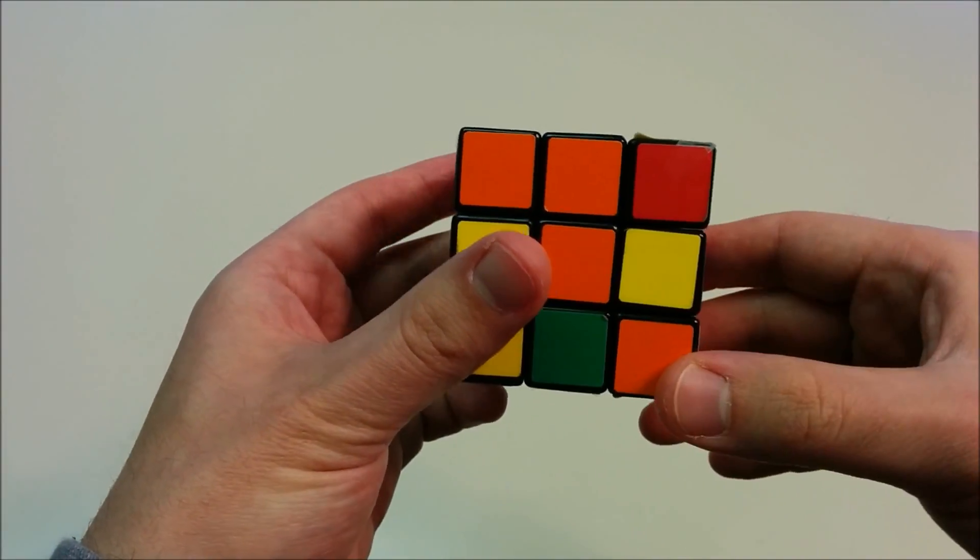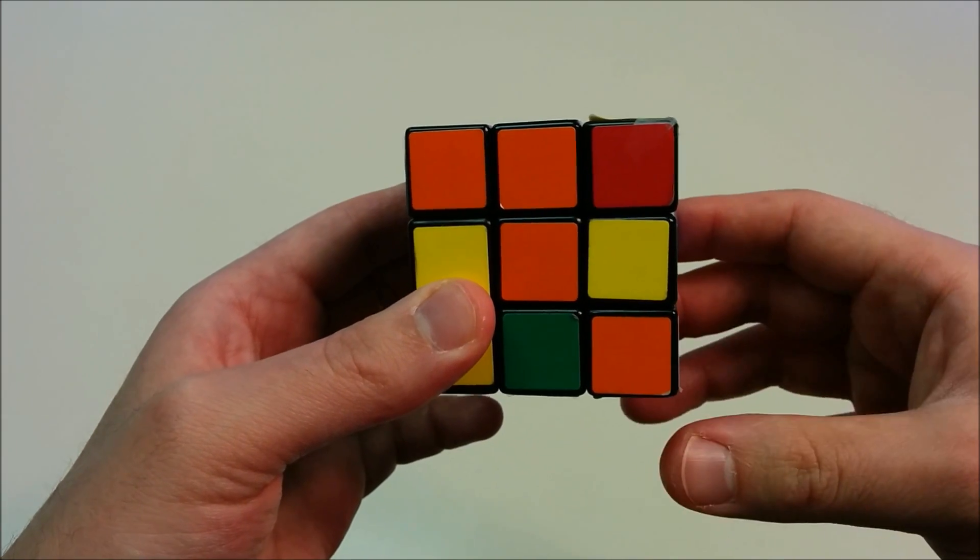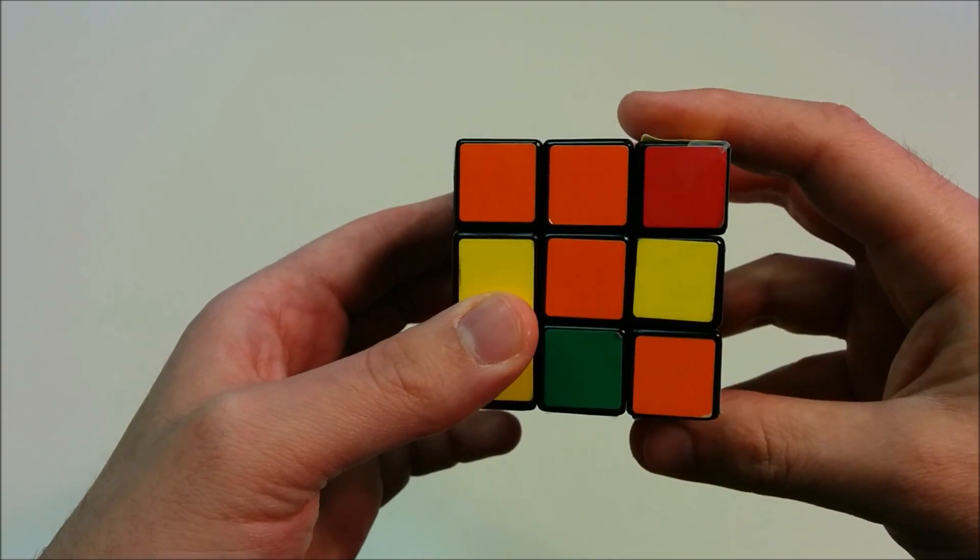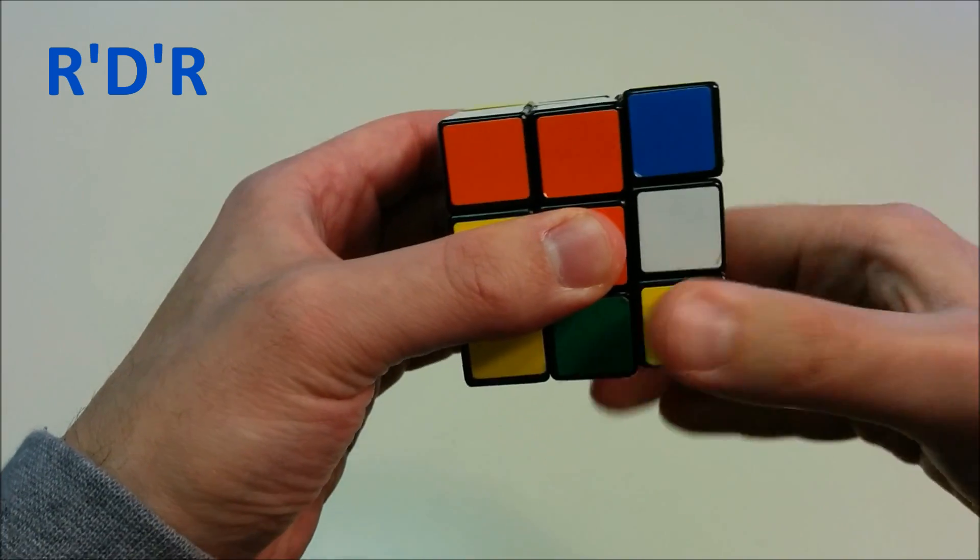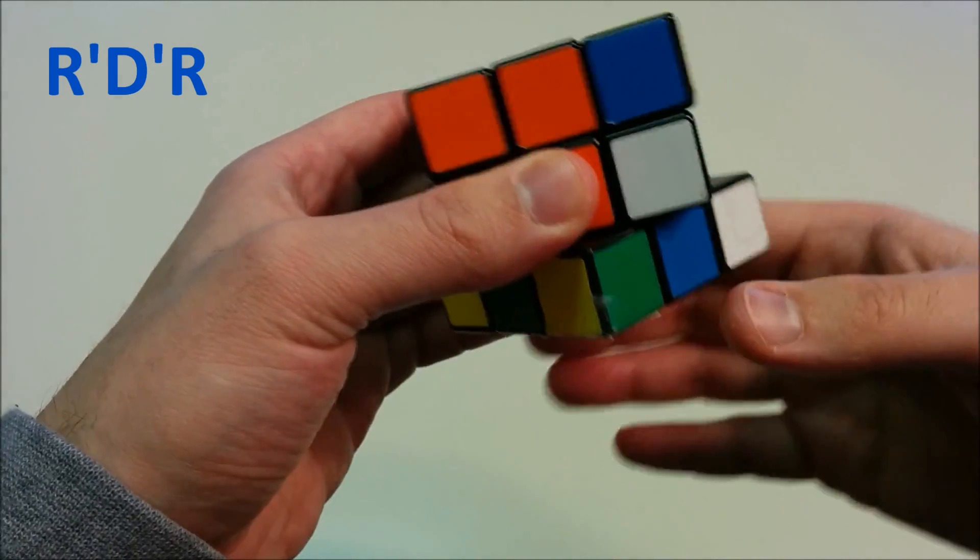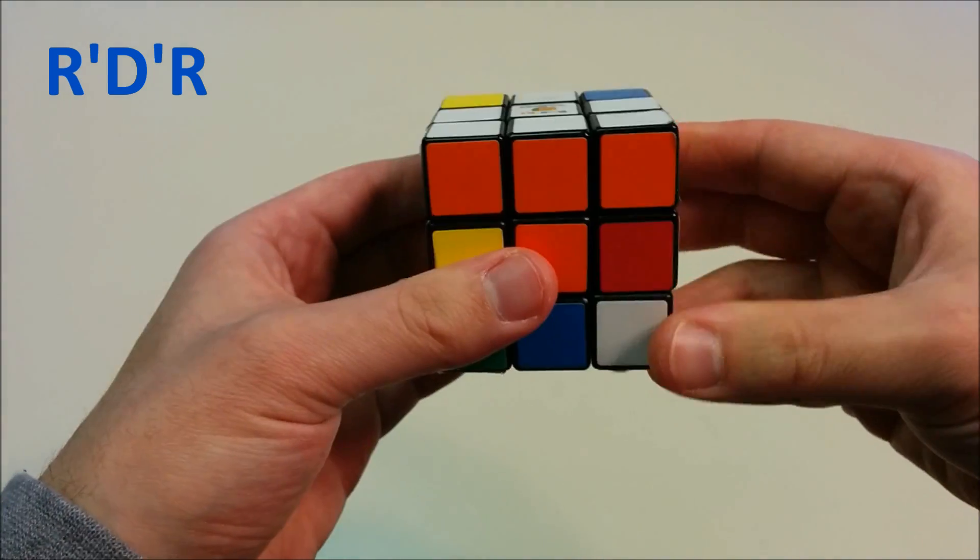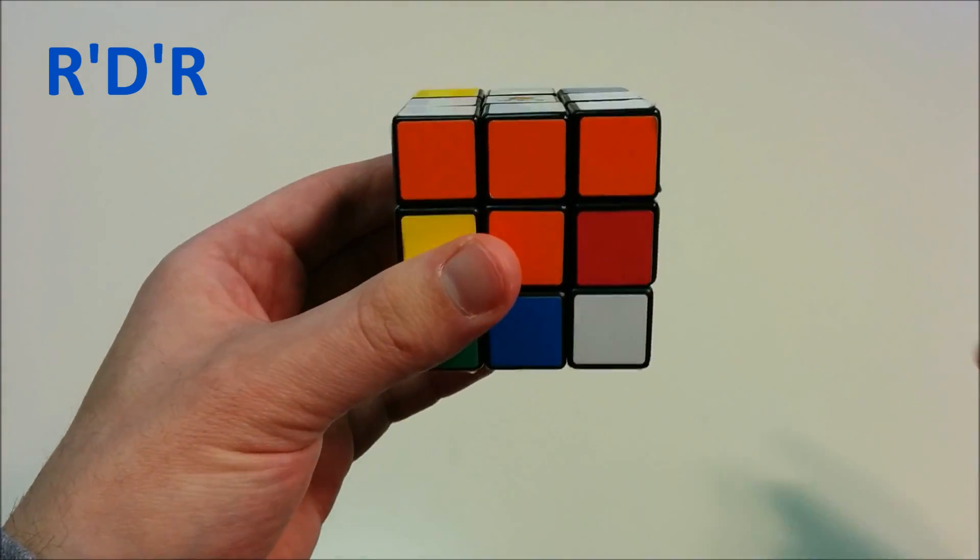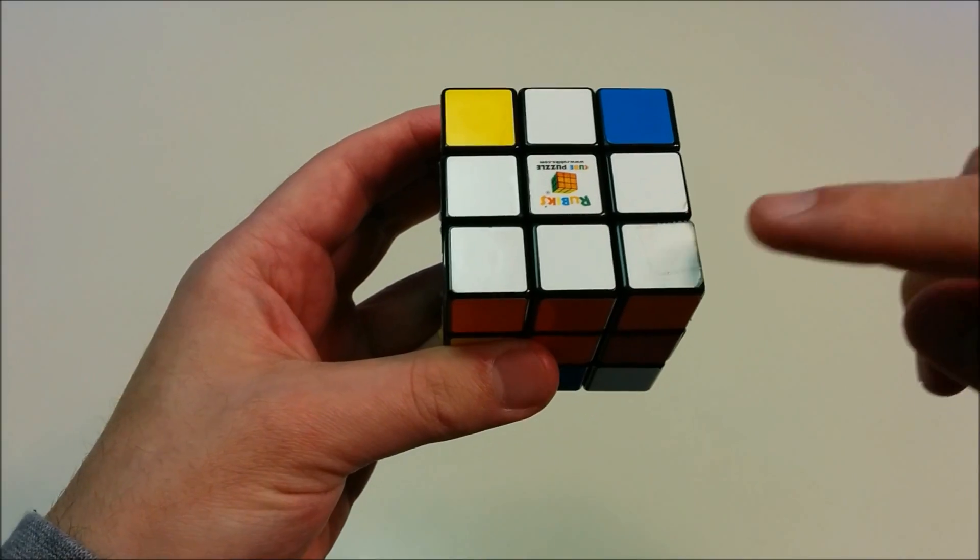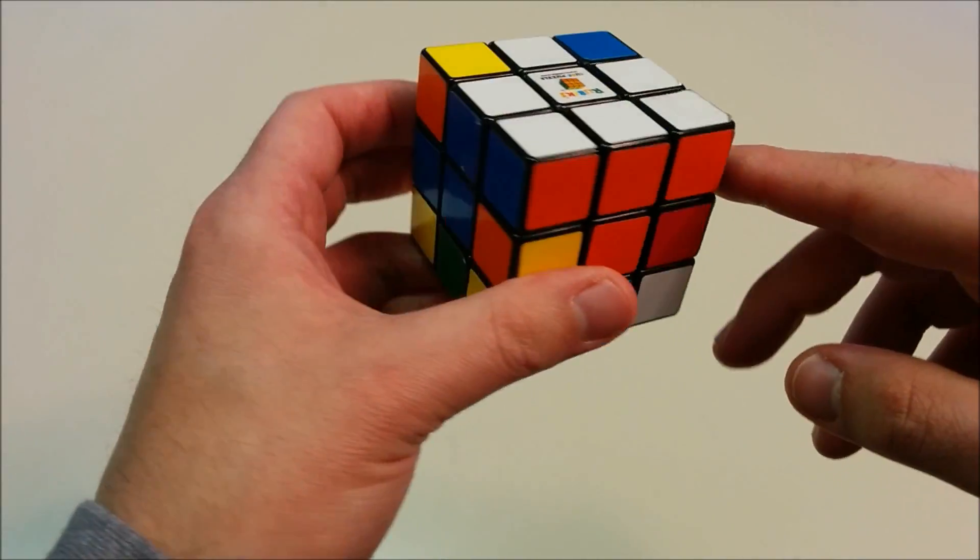And we want to move it to the top. So when you have a case where your corner has white on one side and is matching the other side, you can go R prime, D prime, R. And that will bring the corner up. So that's what happens when you have the corner on the bottom right. If it's white, you need to move it to the top right.